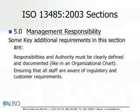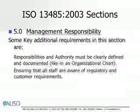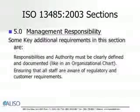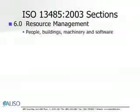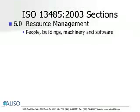Also ensuring that all staff are aware of regulatory and customer requirements. Section 6.0, Resource Management, is entirely about the people, buildings, machinery, or software — anything that makes a company a business such as people, buildings, and equipment. Basically anything that's needed to make a product or a service. Top management must manage the resources as well as the infrastructure so that a quality product can be produced.